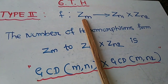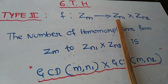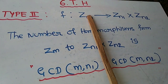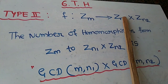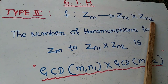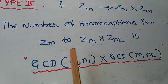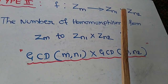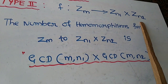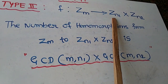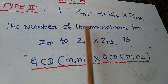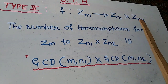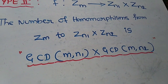The second type is when the function is in the form f from ZM to ZN1 cross ZN2. In type 1 we had only ZM to ZN, but here there is a direct product ZN1 cross ZN2. The formula for the number of homomorphisms is: GCD of M comma N1, multiplied by GCD of M comma N2.